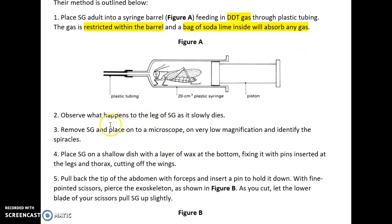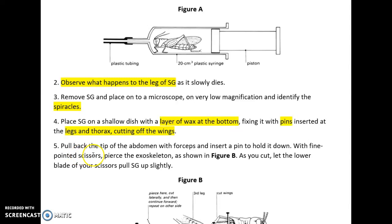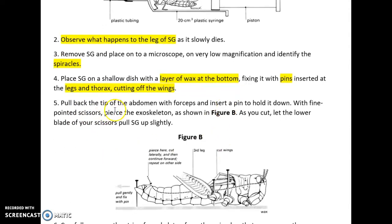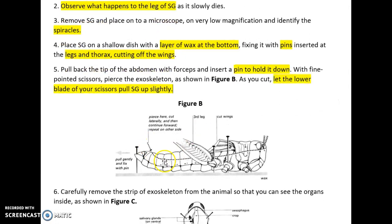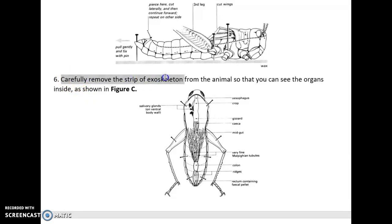It says to observe what happens to the leg as it slowly dies. Remove the insect and place on a microscope at very low magnification to identify the spiracles. Place insect on a shallow dish with a thin layer of wax at the bottom, fixing it with pins inserted at the legs and thorax, cutting off the wings. Pull back the tip of the abdomen with forceps and insert a pin to hold it down. With fine pointed scissors, pierce the exoskeleton as shown in figure B. As you cut, let the lower blade of your scissors pull SG up slightly. Carefully remove the strip of the exoskeleton so you can see the organs inside, as shown in figure C.